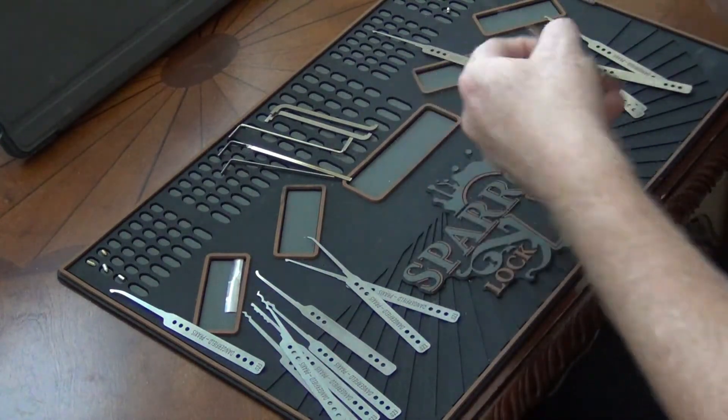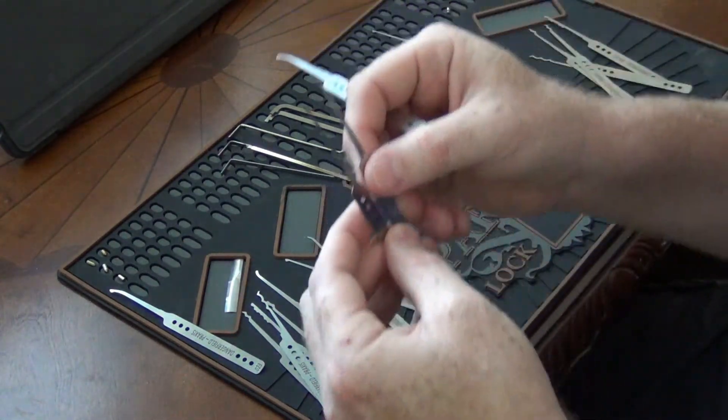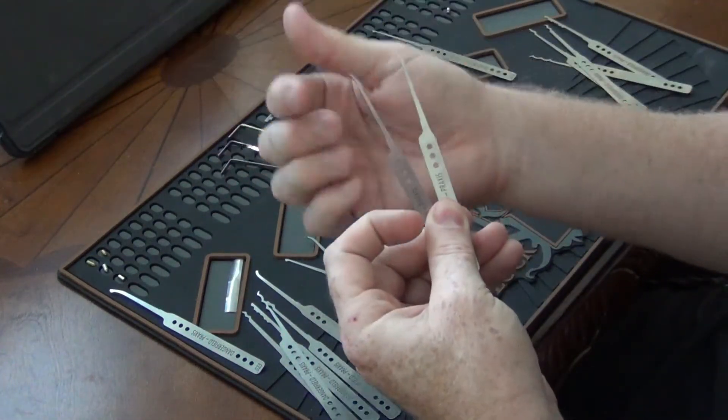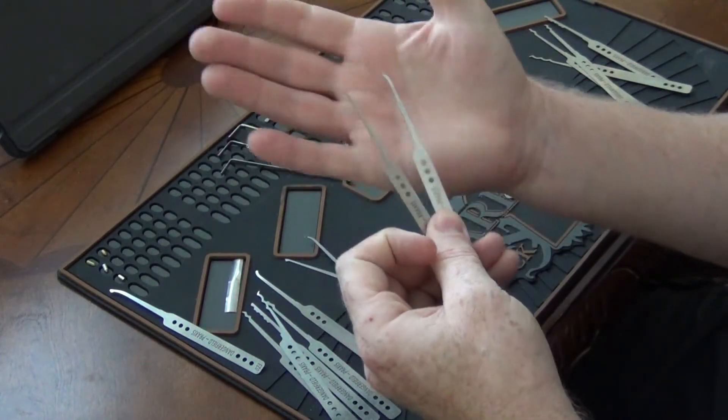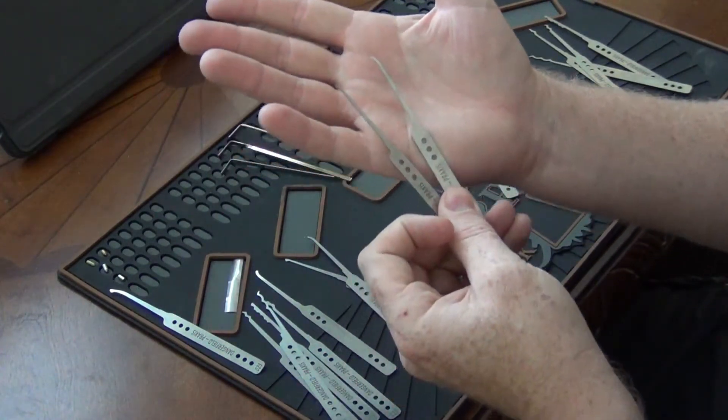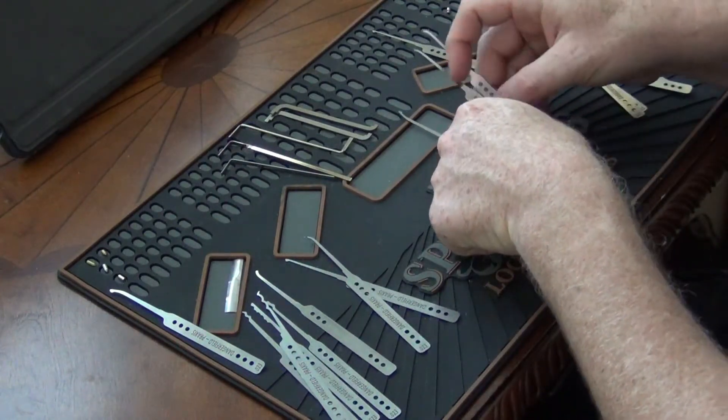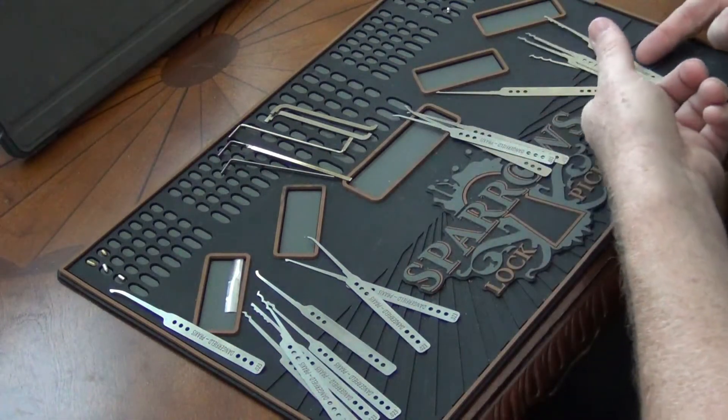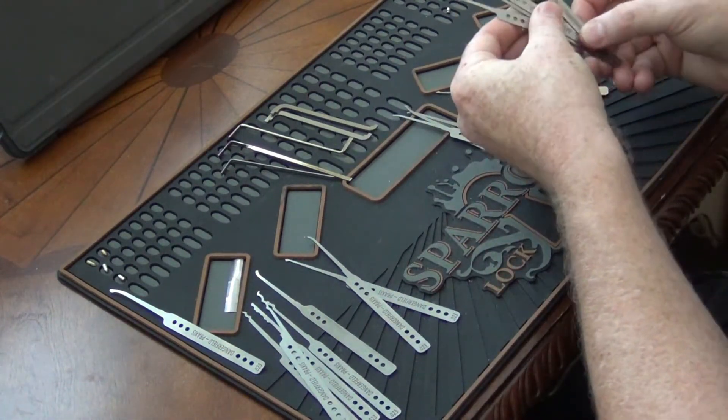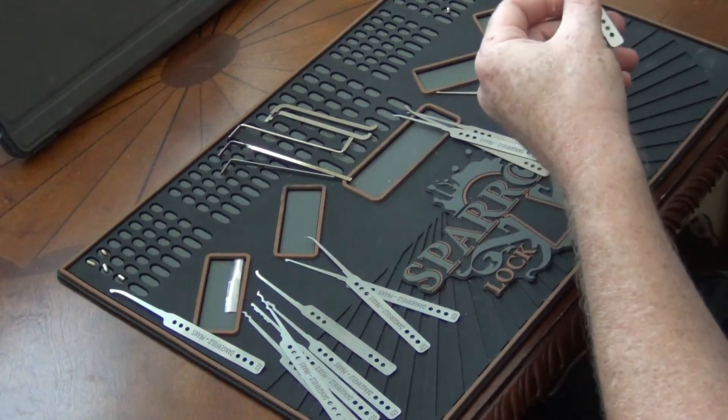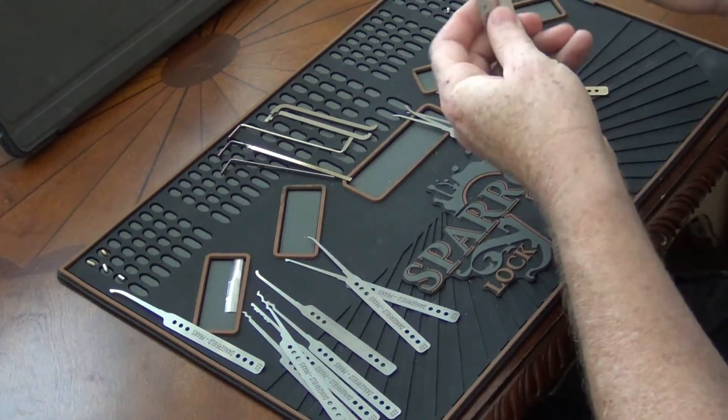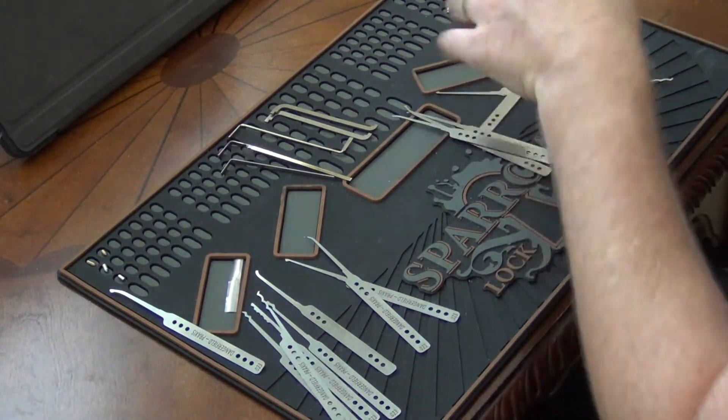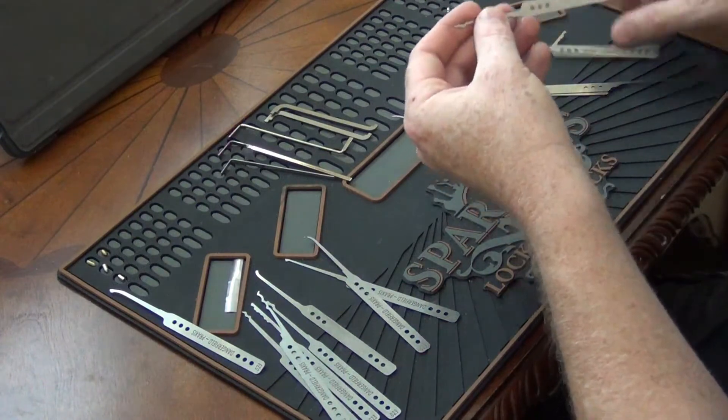And then they have a couple different hooks here. You can see the differences in these hooks - one of them is kind of pointy on the end, the other one is rounded off. Those are probably the three main picks. It comes with a diamond also and then three different types or four rakes: triple peak or the Bogota, little L rake or city rake. Then it comes with an S type rake. That one probably needs to file off a little bit, that's got a little sharp edge on it.